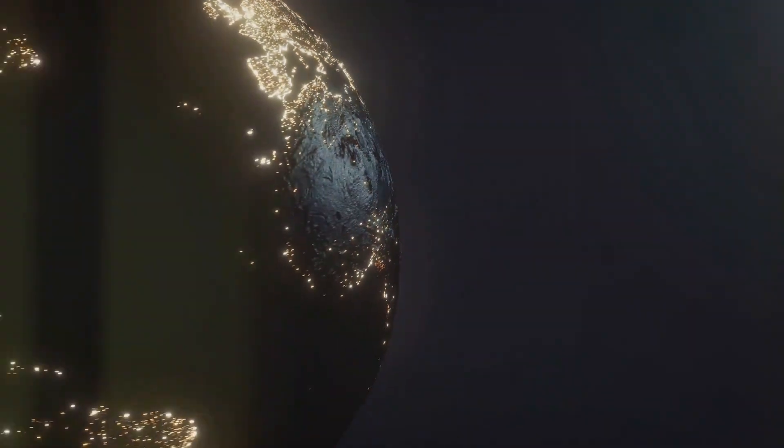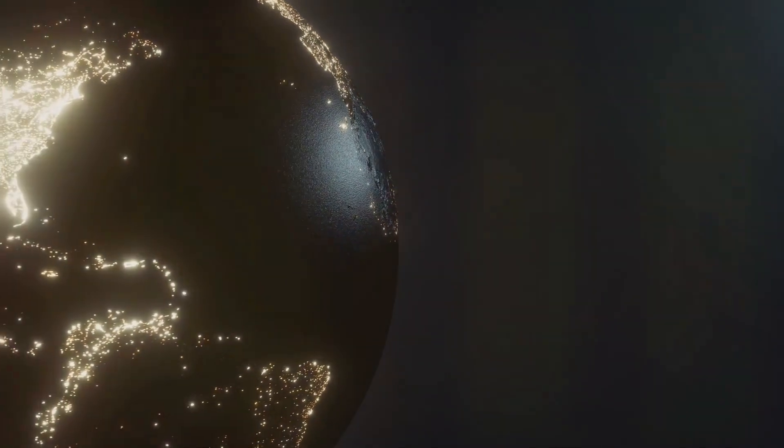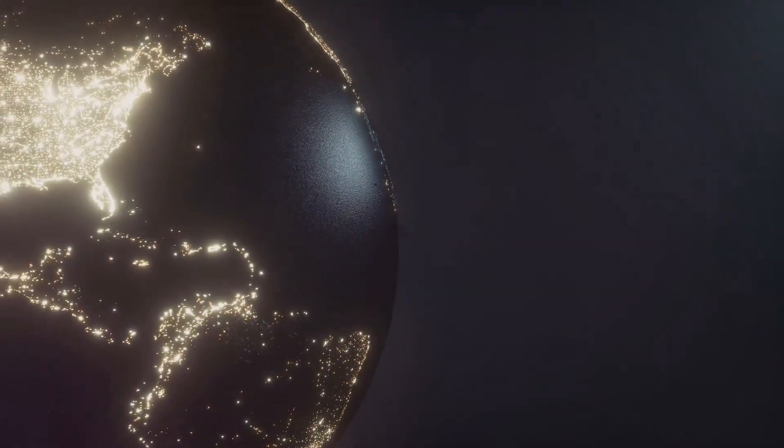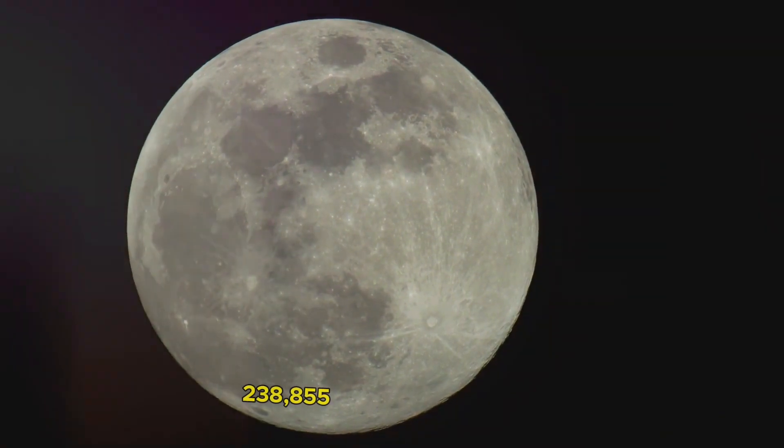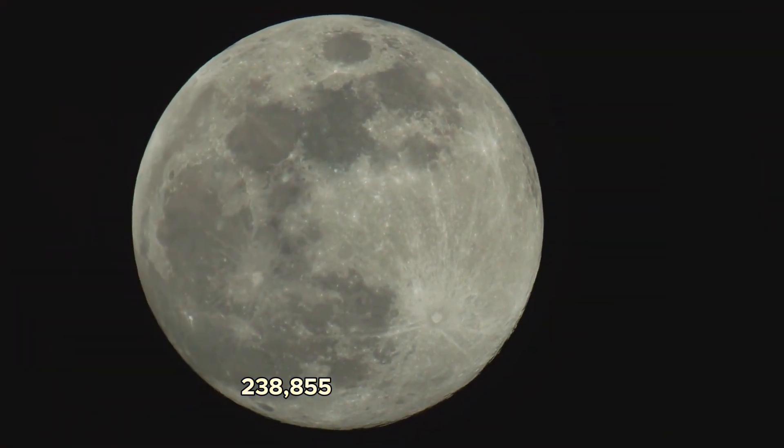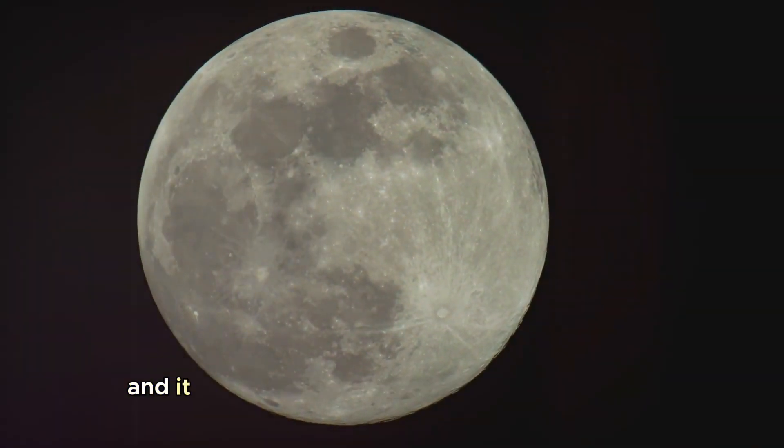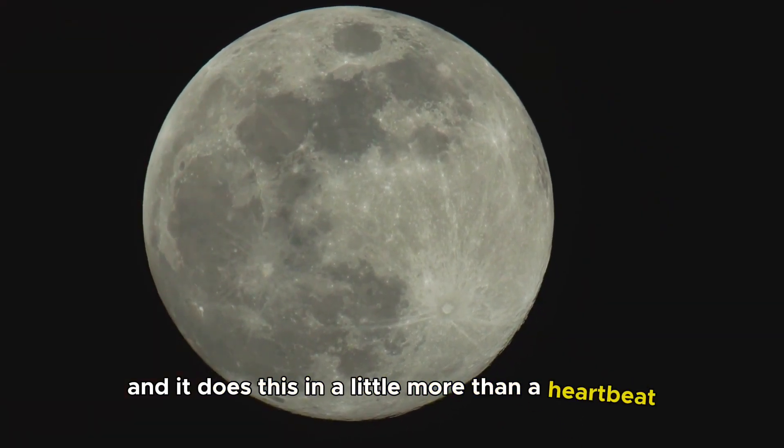Now imagine this. The light from the moon, our closest celestial neighbor, reaches Earth in just over a second. That's right. The beautiful moonlight that you see has traveled a whopping 238,855 miles to reach you. And it does this in a little more than a heartbeat.